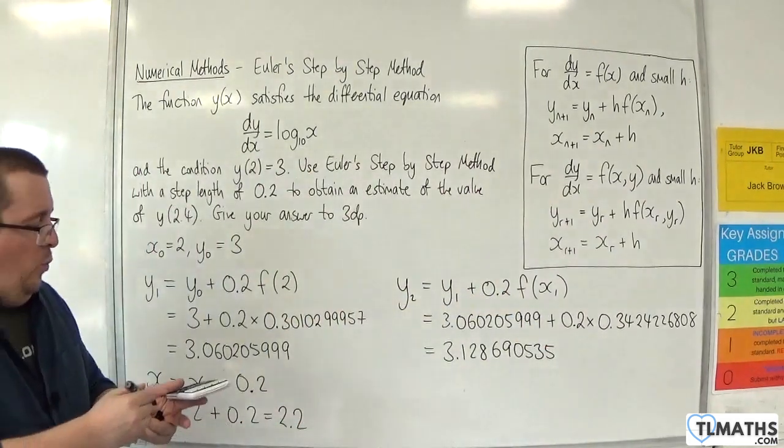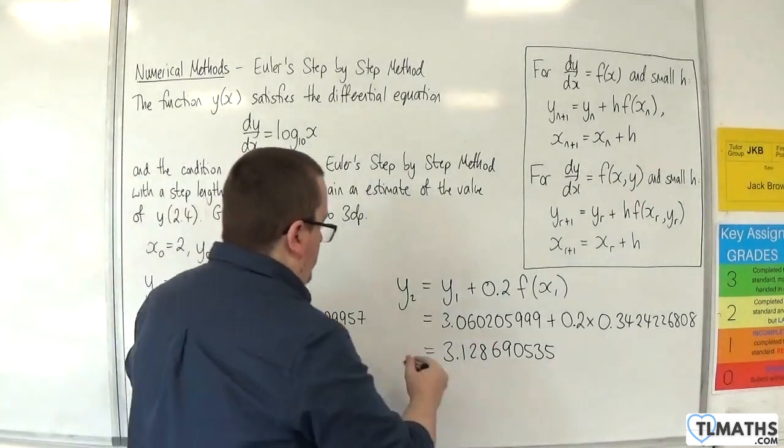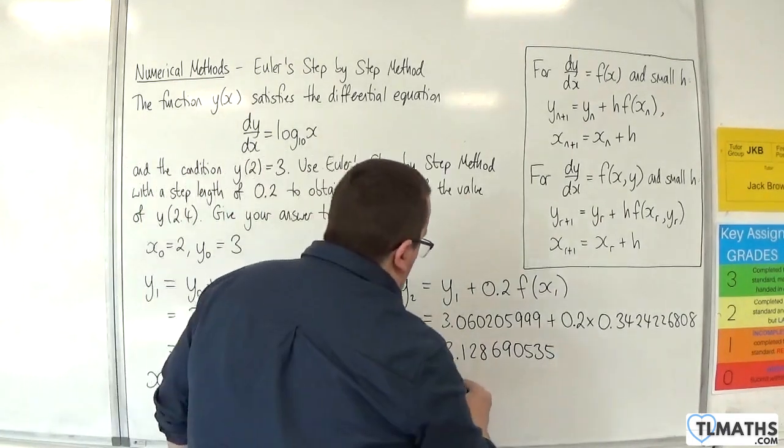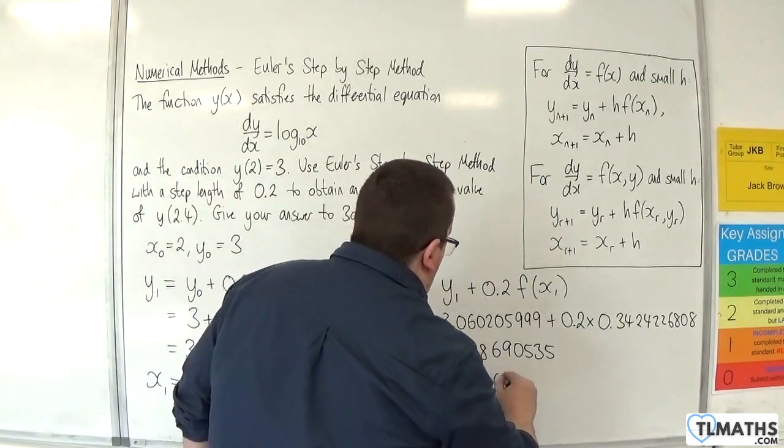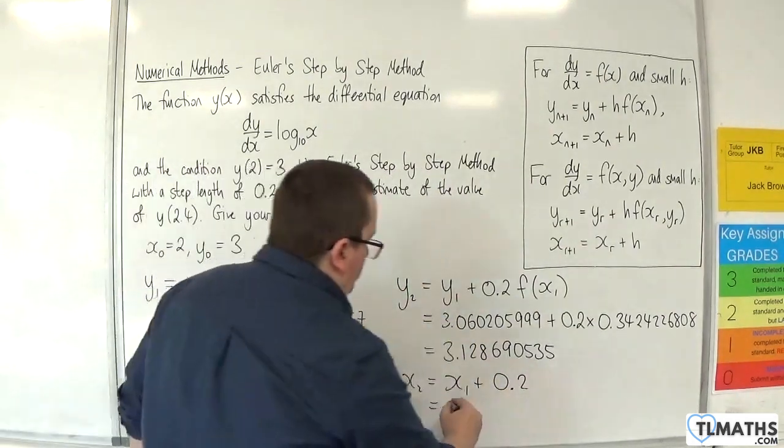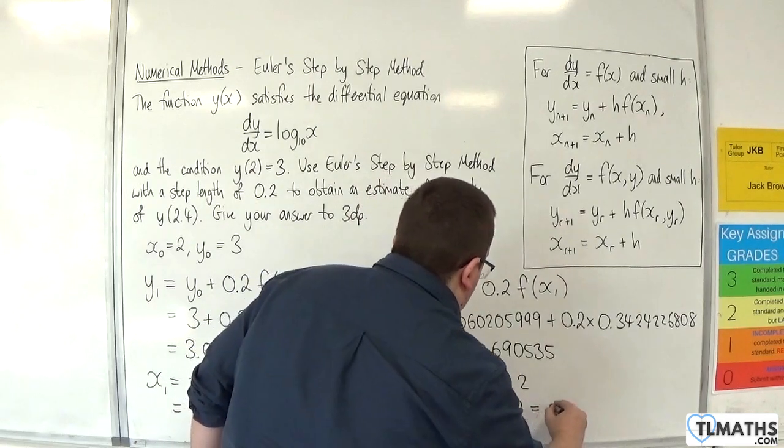Now that is y2. What is x2 at that point? So what is the corresponding x value? Well, that is x1 plus the step length. x1 was 2.2 plus the 0.2 gets us 2.4.